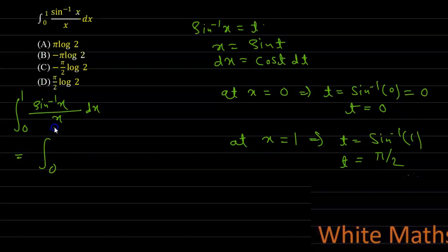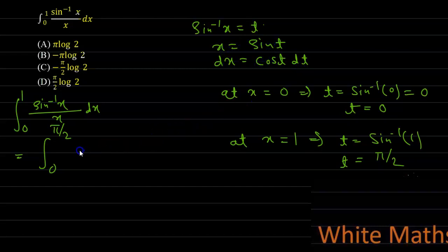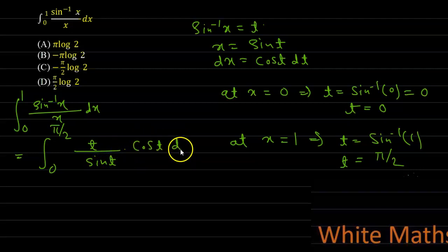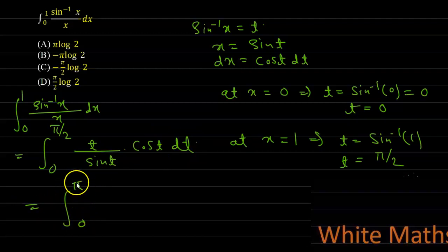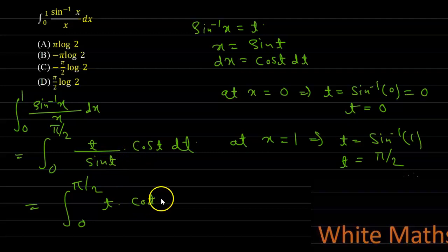The integral becomes limit 0 to pi by 2: in place of sine inverse x put t, in place of x put sine t, and in place of dx put cos t dt. This becomes t multiplied by cos t divided by sine t, which is cot t, so the integral is t times cot t dt from 0 to pi by 2.